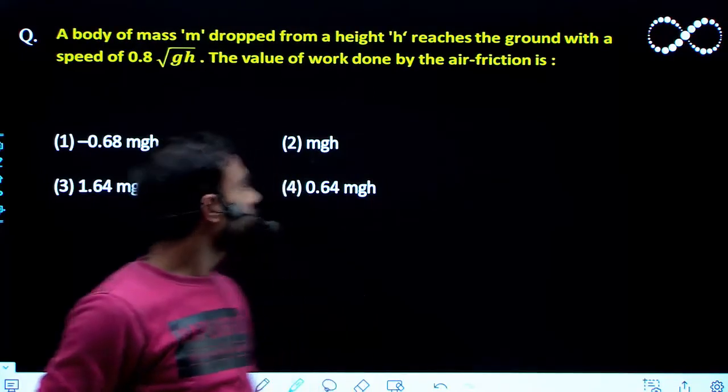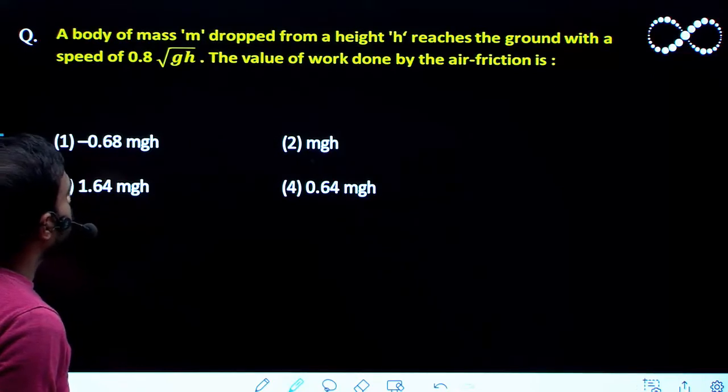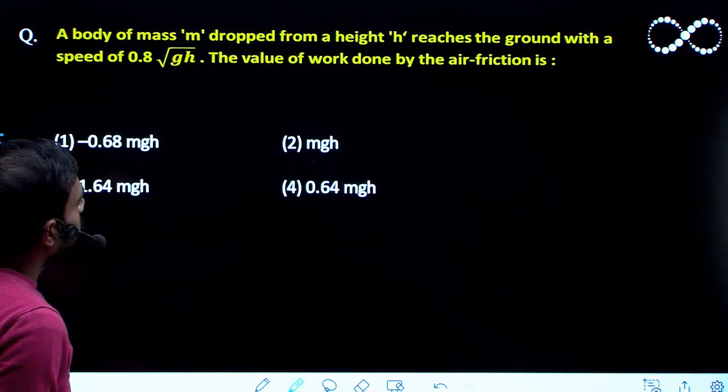Hello students, let us see this question here. A body of mass m dropped from height h reaches the ground with speed 0.8√(2gh). The value of work done by the air friction.